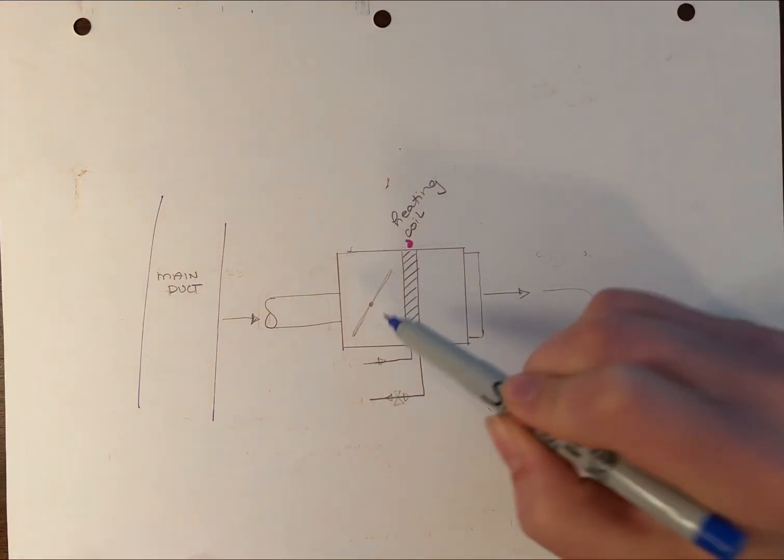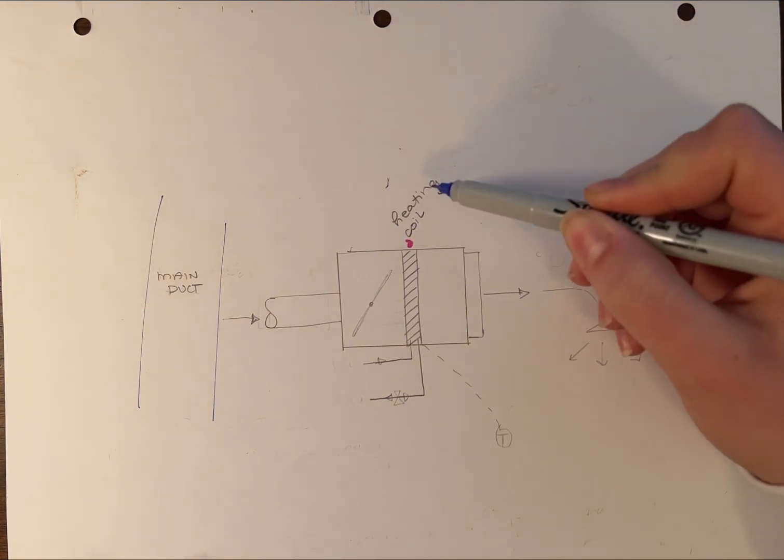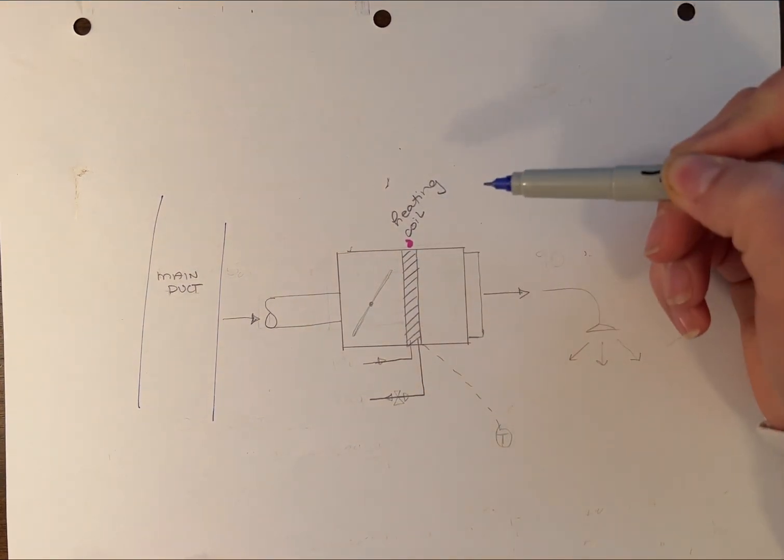Inside that terminal unit, you have a modulating damper which controls airflow, and a heating coil that controls temperature.